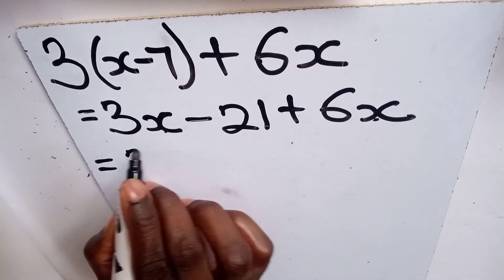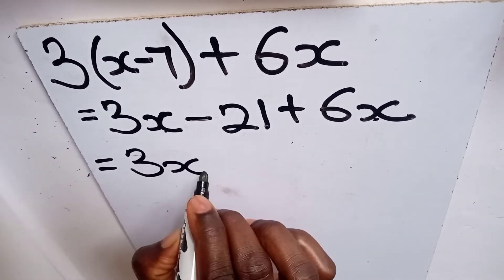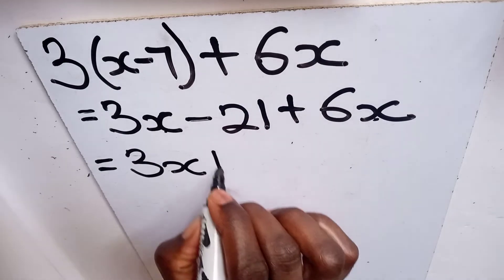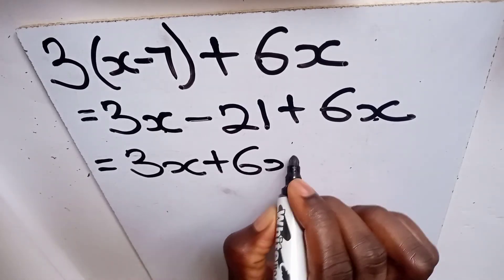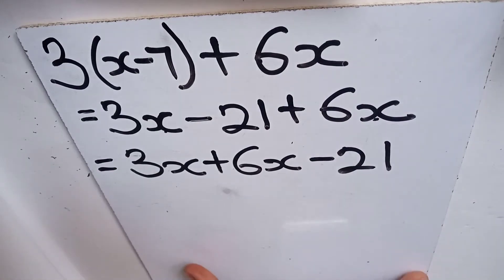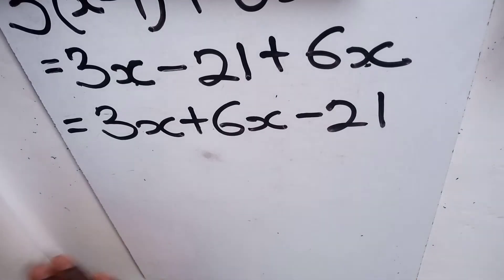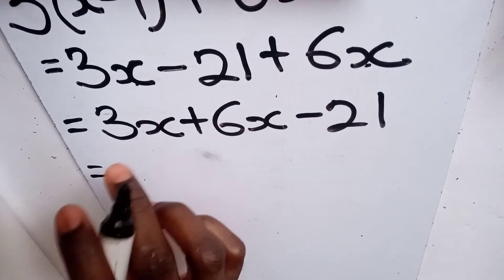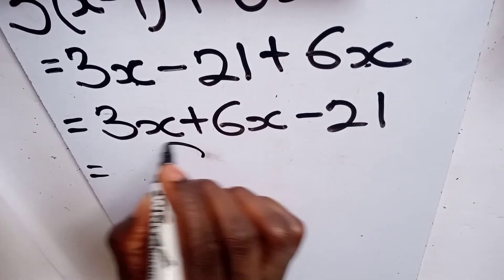Let's rewrite them: you get 3x + 6x, then your negative 21 will follow. Now that we have this expression, we can add the like terms, which gives us 3x + 6x = 9x.